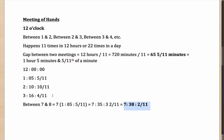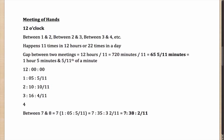If you had to calculate the meeting between 4 and 5, it would be 4 times 65 5/11 minutes. So you get 4 hours, 20 minutes, and 20/11. Since 20/11 = 1 and 9/11, the final answer is 4:21 and 9/11. This concept is handy and useful for fast calculations.